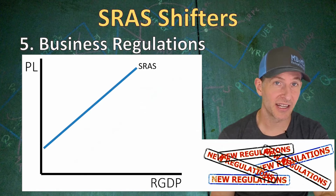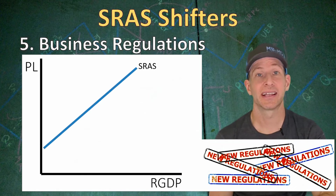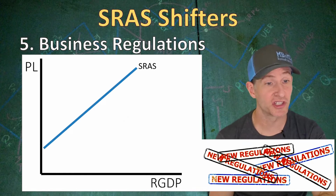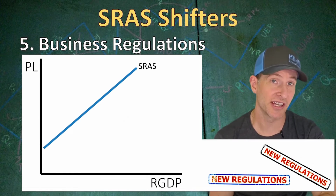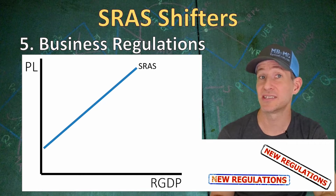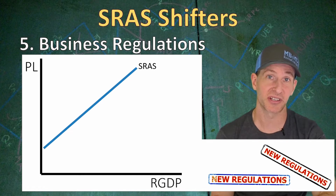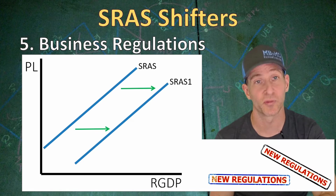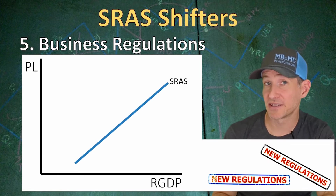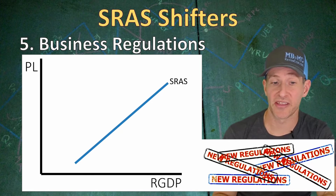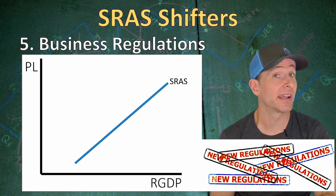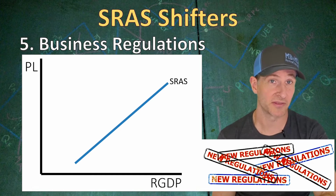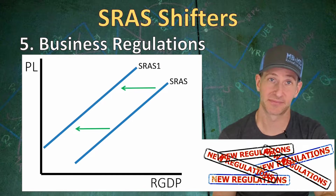Our fifth short run aggregate supply curve shifter is business regulations. If there's a reduction in business regulations, that's generally going to decrease production costs, shifting our short run aggregate supply curve to the right. If we have an increase in business regulations, on the other hand, that's going to increase production costs, reducing our short run aggregate supply, shifting it to the left.